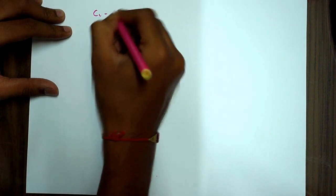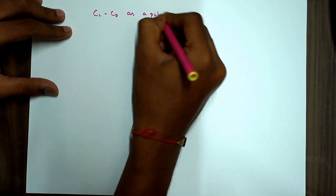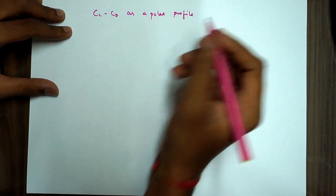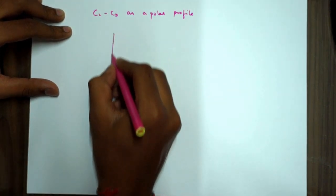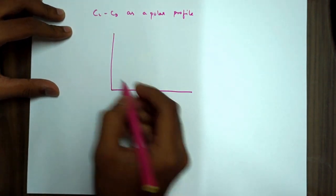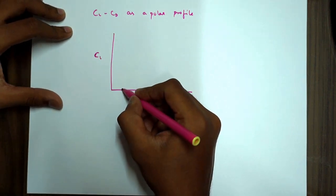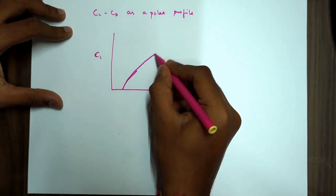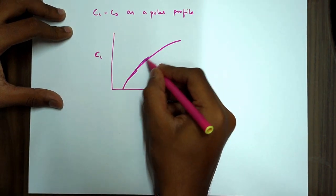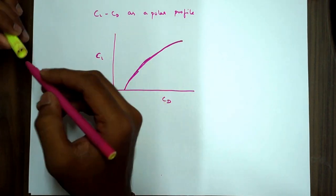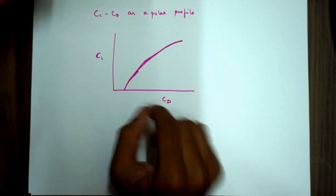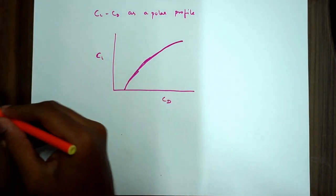So now we'll continue on to CL by CD as a polar profile. So as a polar profile, we have CL here and CD here. So the graph almost turns out to be something like this. So this is the graph for CL by CD in the polar profile, where the drag is on the x-axis and CL is on the y-axis.